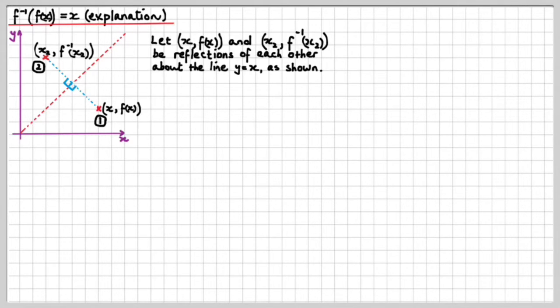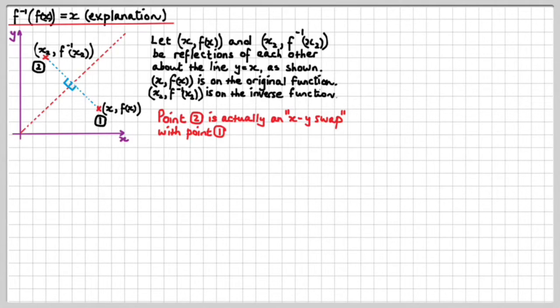You'll be amazed. So, we're letting (x, f(x)) and (x₂, f⁻¹(x₂)) be reflections of each other about the line y equals x as I just explained. (x, f(x)) is the coordinate point on the original function and (x₂, f⁻¹(x₂)) is on the inverse function, right? The reflection of the original point. So, you know and I know that point 2 is actually an x-y swap of point 1. So, I can also put a supplementary label on this point here. See that? So, that's really f(x) and x. So, x₂ is the same as f(x) and f⁻¹(x₂) is the same as x and that really proves it as I'll now explain.